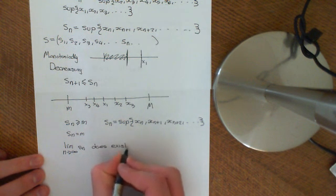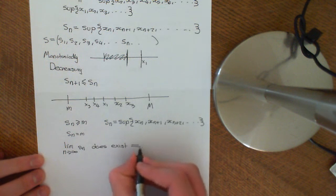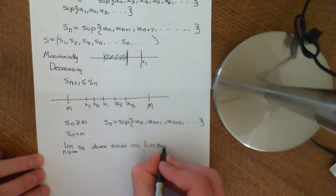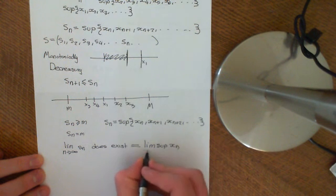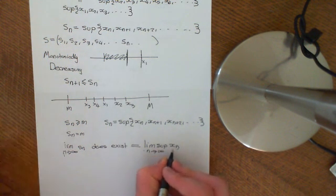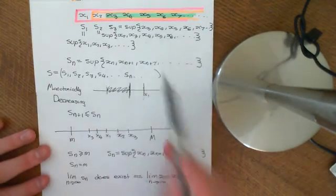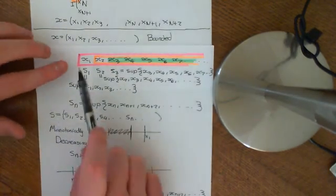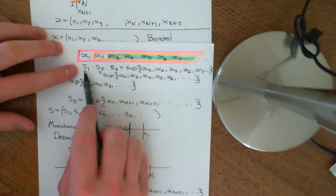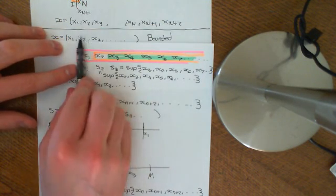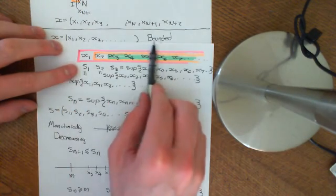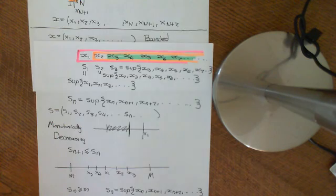So Sn is a monotonically decreasing sequence and it's bounded below. Therefore it has a limit — the limit of the sequence Sn as n approaches infinity does exist. This is how we define the lim sup of the sequence Xn as n approaches infinity: it is the limit of the supremums, which is why it's denoted lim sup. You gradually move the starting point of the set over which you're taking the supremum, and that limit must exist.